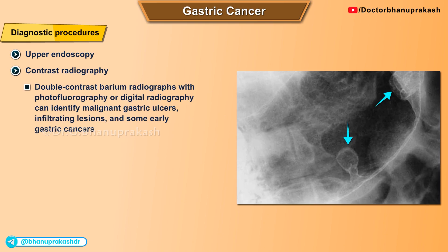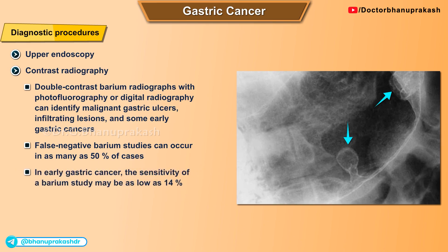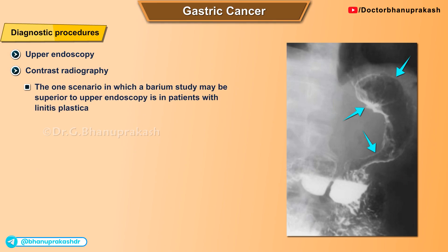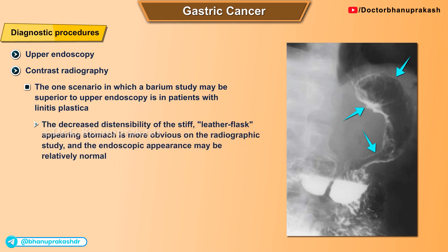Double-contrast barium radiographs with photo-fluorography or digital radiography can identify malignant gastric ulcers, infiltrating lesions, and some early gastric cancers. However, false-negative barium studies can occur in as many as 50 percent of cases, and in early gastric cancer the sensitivity may be as low as 14 percent. The one scenario where barium study may be superior to upper endoscopy is in patients with linitis plastica, where the decreased distensibility of the stiff, leather-flask-appearing stomach is more obvious radiographically.